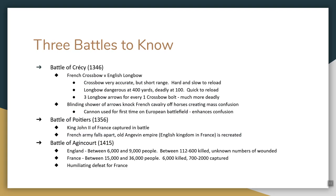Three battles you have to know: the Battle of Crecy in 1346, the Battle of Poitiers in 1356, and the Battle of Agincourt in 1415 — probably the most famous of the three. At Crecy, it's the first time the English longbow and the French crossbow came into contact. The crossbow is accurate but has short range and is slow to reload. The longbow is dangerous at 400 yards and deadly at 100 yards, and quick to reload. A good longbowman can shoot three arrows for every one crossbow bolt. There was a blinding shower of arrows that knocked all the French cavalry off their horses. The English also used cannon for the first time — it didn't do a lot of damage, but it created a lot of confusion.